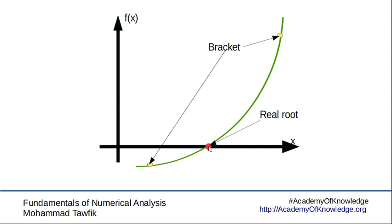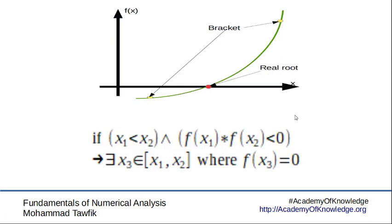The mathematical statement for that is: if x₁ is less than x₂ and f(x₁) times f(x₂) is less than zero, this part of the statement just says that the sign is changing. Whether f(x₁) is positive and f(x₂) is negative or vice versa, multiplying them will always be less than zero.